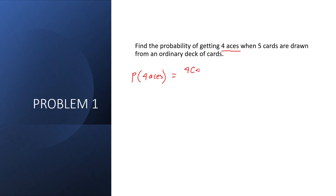The fifth card can be drawn from the 48 remaining cards, because there are 52 cards total and 52 minus 4 leaves 48 cards remaining. From those 48 cards we choose the fifth card. The total sample space is 52 combination 5, because the probability equals the event over the sample space.